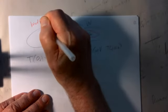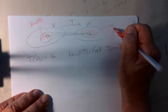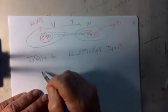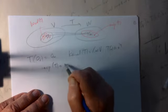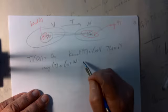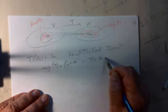The kernel of T is the set of all vectors mapped to zero. The image of T is all vectors w in W such that w = T(v) for some vector v in V.